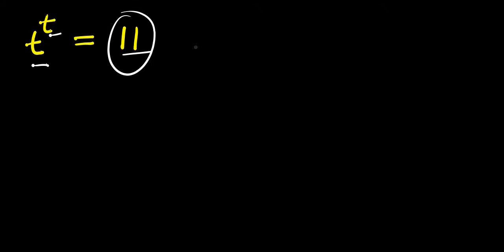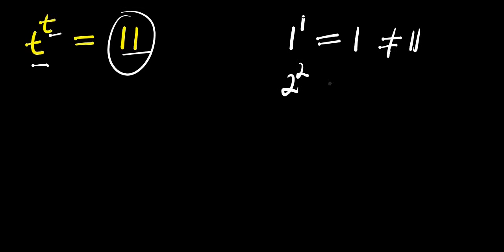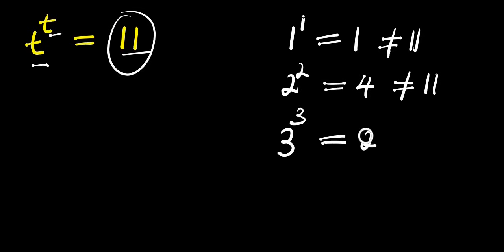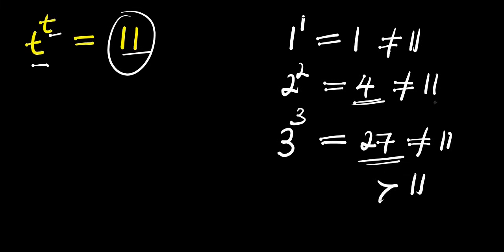That means it must be a number that we raise to the power of itself. For instance, if you consider 1 raised to the power of 1, this gives you 1 — not 11. If you consider 2 raised to the power of 2, this equals 4 — also not 11. If you consider 3 raised to the power of 3, that is 3 times 3 times 3, which equals 27 — not 11. In fact, 27 is greater than 11 while 4 is less than 11.